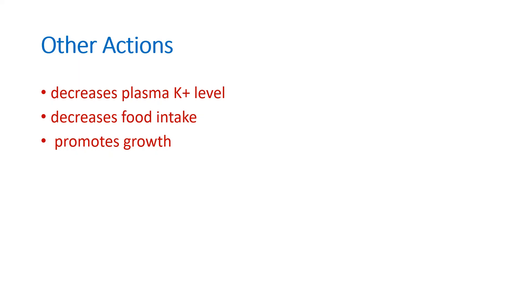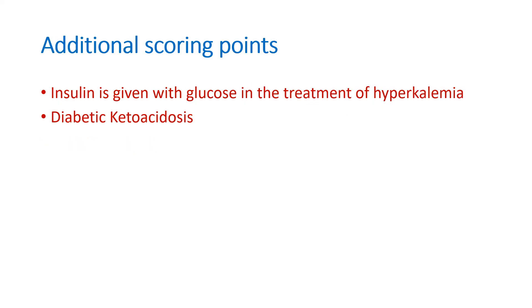Other actions of insulin include: decreasing plasma potassium level, which is clinically significant — in patients with hyperkalemia, insulin along with glucose is given as an injection to decrease the plasma potassium level. Insulin also decreases food intake and promotes growth. Clinically, insulin is given with glucose in the treatment of hyperkalemia.